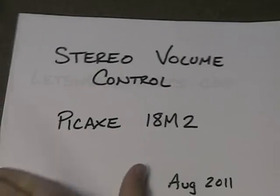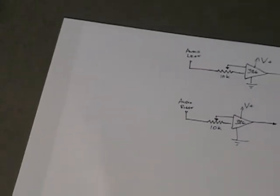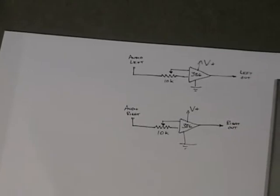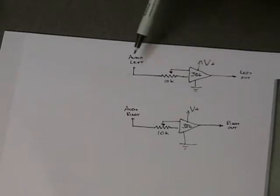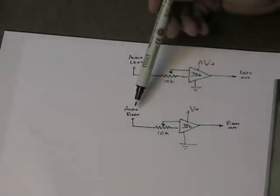It's pretty simple actually. The basic circuit starts with the 386 audio amplifier chip and this circuit is straight out of Forrest Mims and everywhere else that you can find it. We have two of them because of the stereo controller, so one 386 for the left channel, one 386 chip for the right channel.